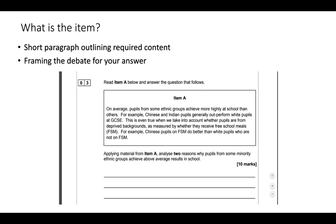The assessment objective being partially assessed here is application — can you apply what is in this item to the question? If you imagine you didn't have the item, it would mean you could talk about anything to answer that question. But when you do have the item, you have to apply that material in your answer. And particularly for ten markers, you can only apply the material from that item.